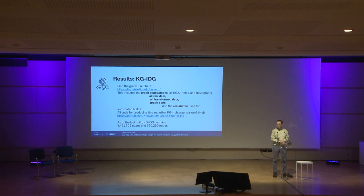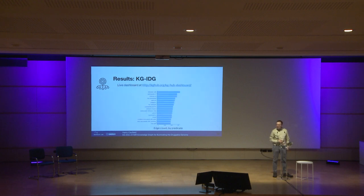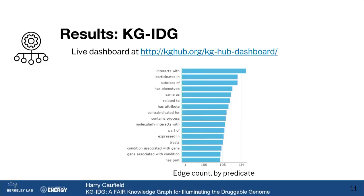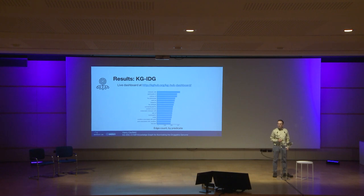We're not trying to hide anything. The code for producing KGIDG in particular is on GitHub as well. Just for context, this is a graph that's about 4.4 million edges and 560,000 nodes — certainly not the largest one out there, but it comes down more to the type of data in there than the exact size. We also deployed a dashboard for this and other KGHub graphs that shows you a basic visual breakdown of the type of predicates in that graph, the exact types of relationships, as well as the individual data sources contributing to the graph. That makes it much easier to see the process of going from data load to transform to merge.